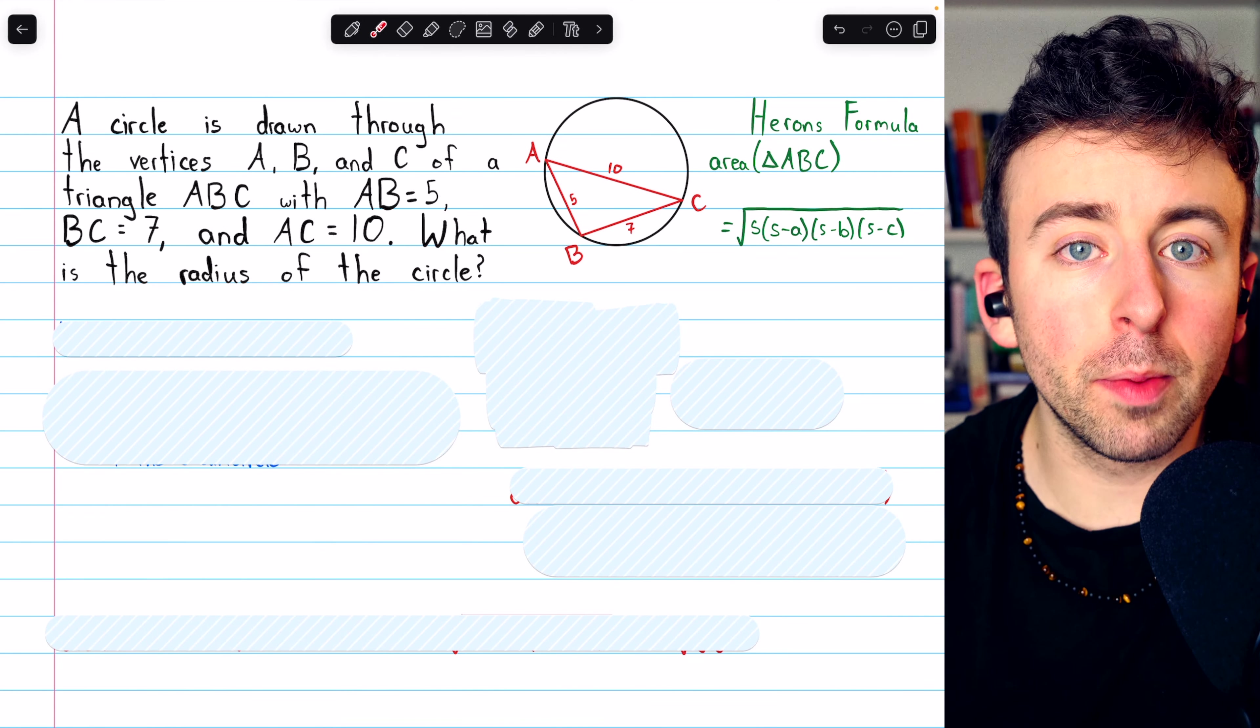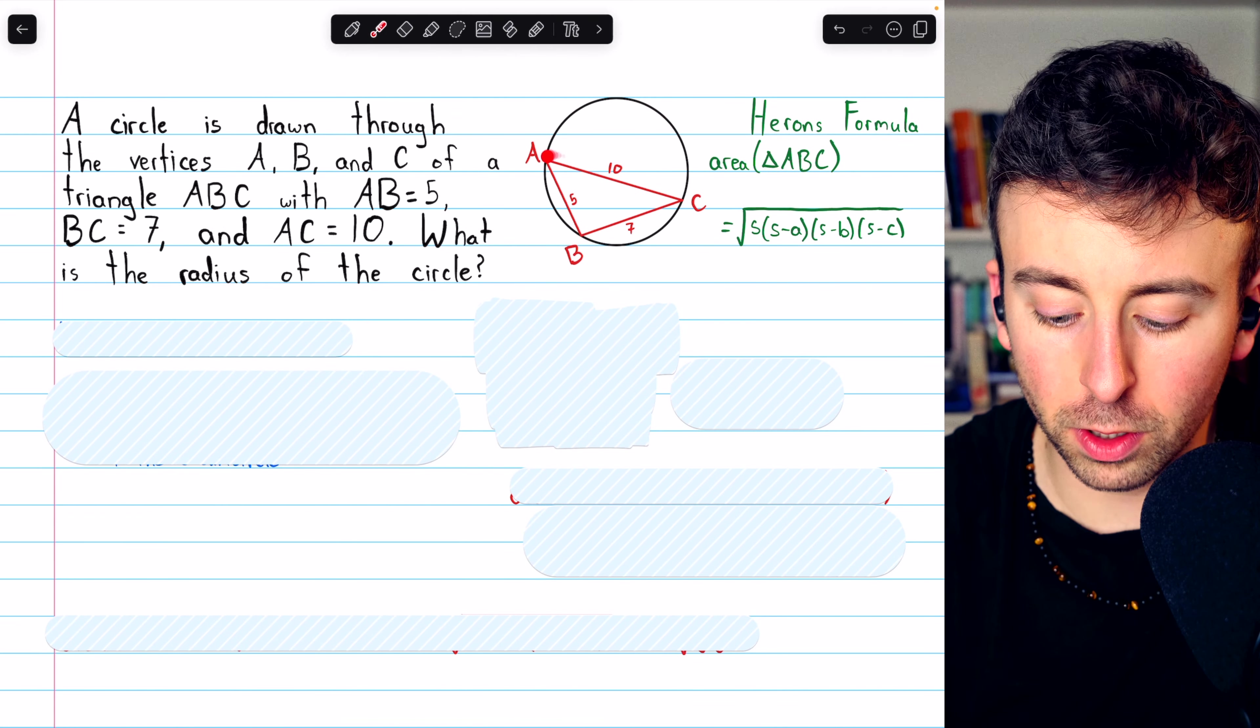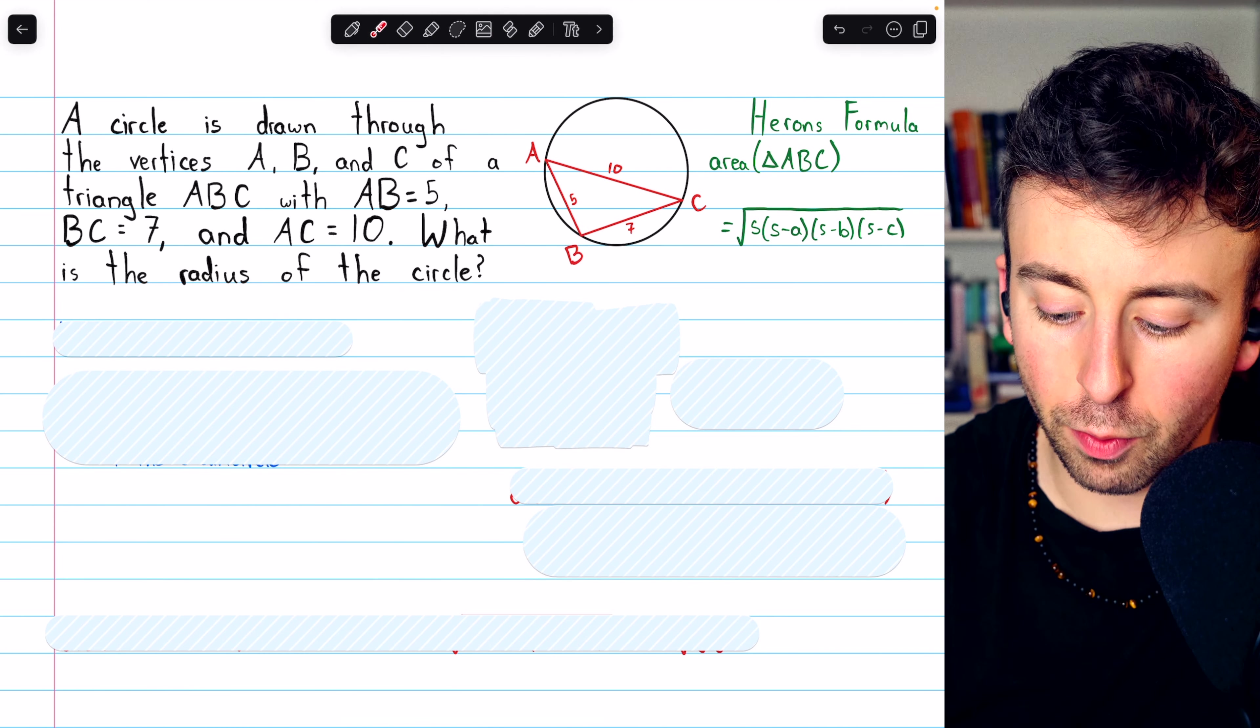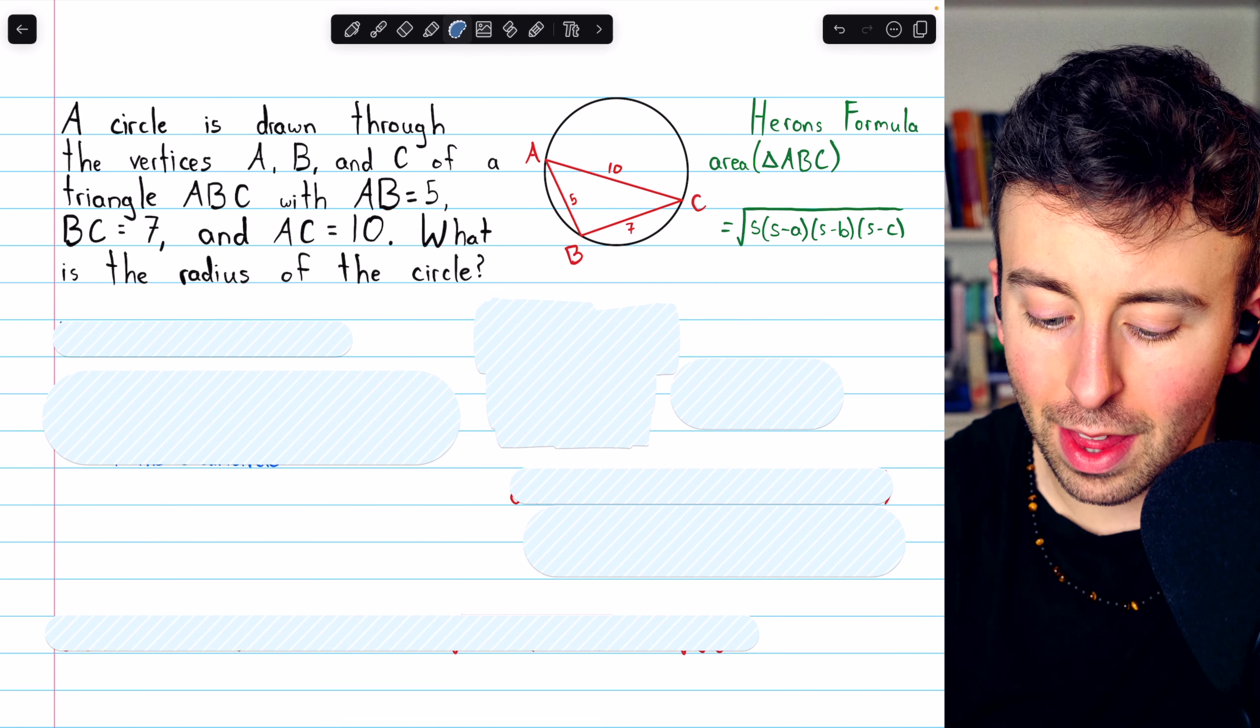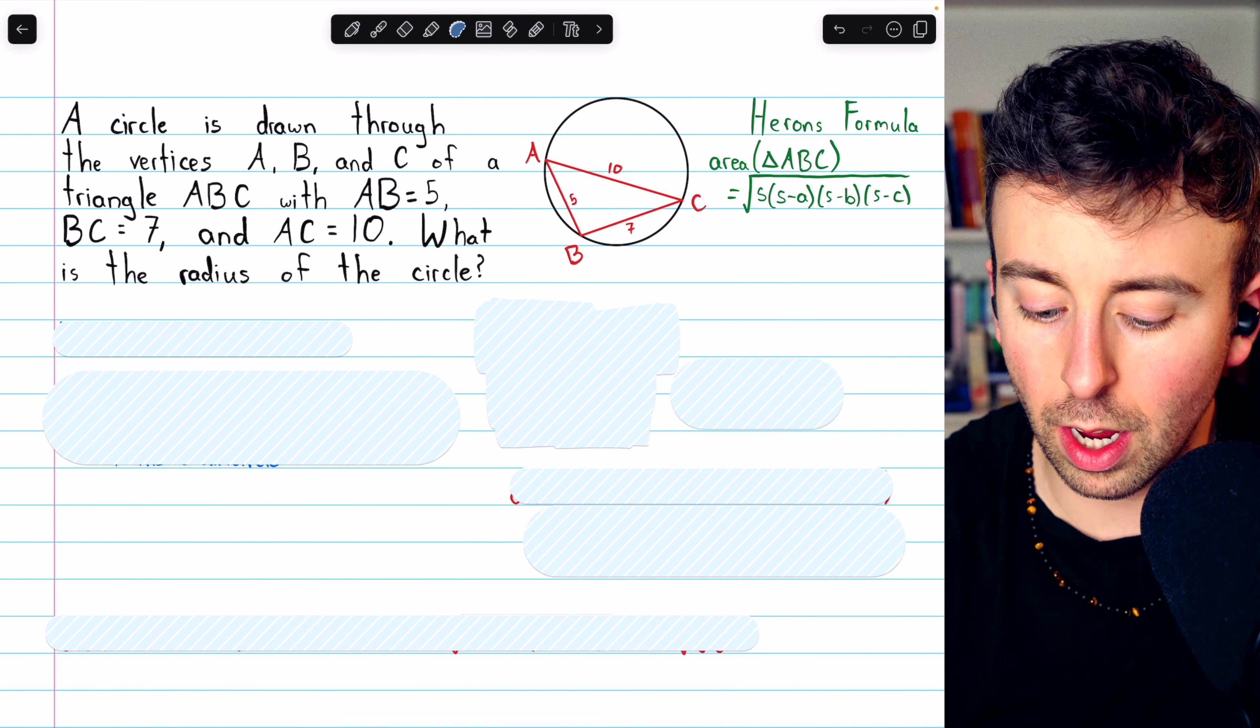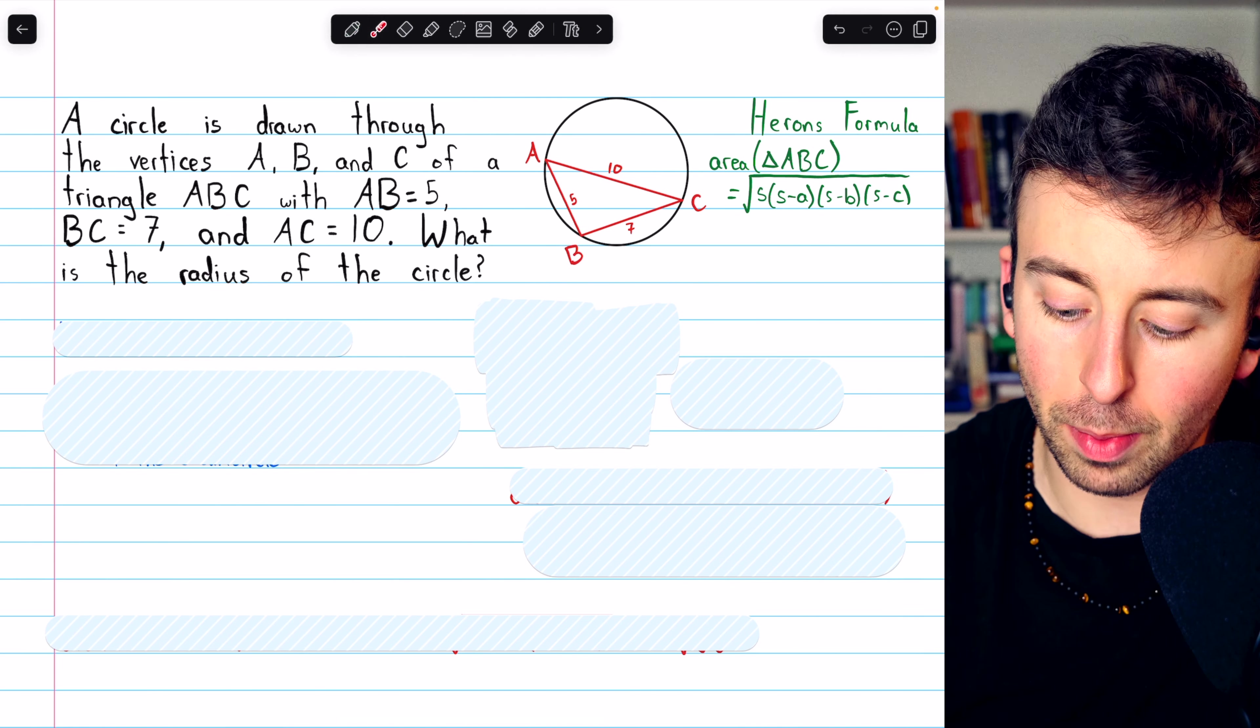To solve this problem and find the radius of the circle using just this triangle, we're going to need Heron's formula for the area of a triangle. That says that the area of a triangle is equal to the square root of the semi-perimeter S,